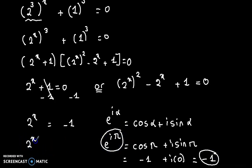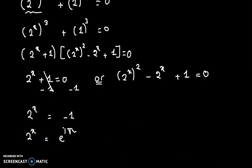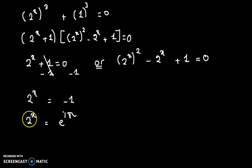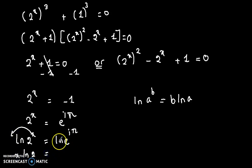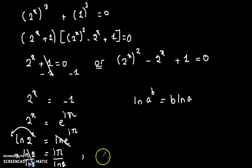So we can replace minus 1 by e to the power i pi. Now we can write 2 to the power x equals e to the power i pi. Applying natural logarithm to both sides: ln of 2 to the power x equals ln of e to the power i pi. Using the log power rule, x ln 2 equals i pi — since ln and e cancel — so x equals i pi over ln 2. This is the first solution.